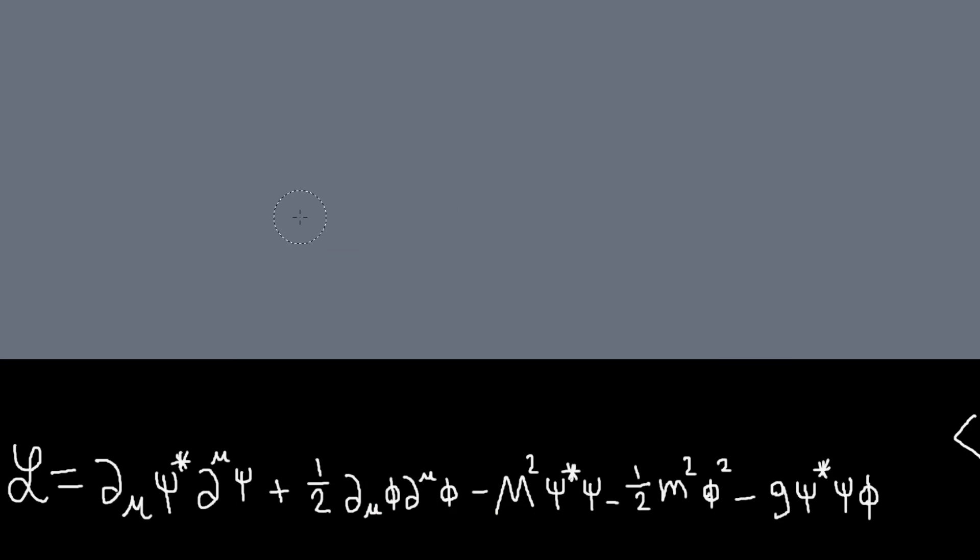Okay, so I wanted to work through the first example of an interacting theory. This is from David Tong's lecture notes. So basically, here is our Lagrangian, these are the free terms, and this is an interacting term.